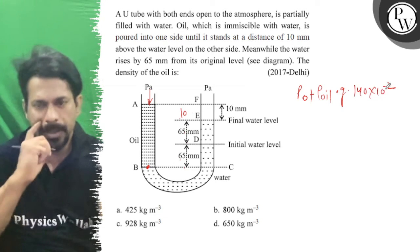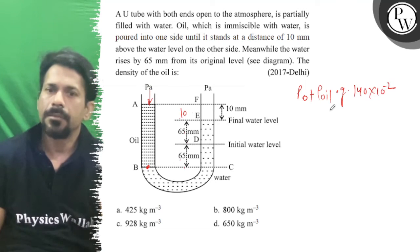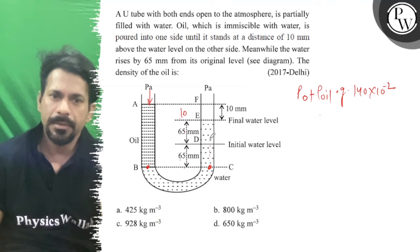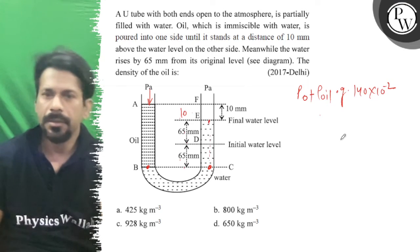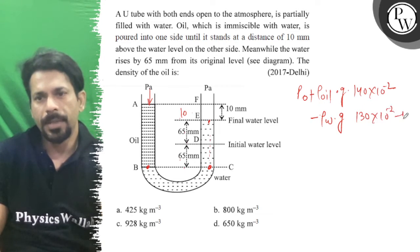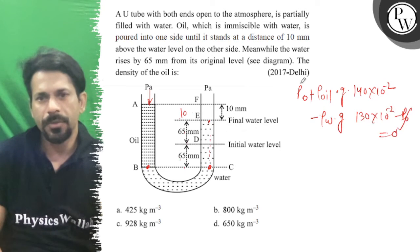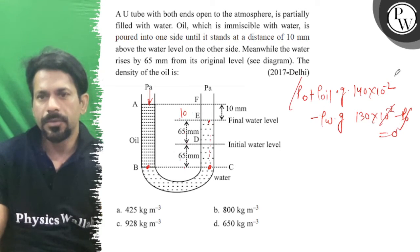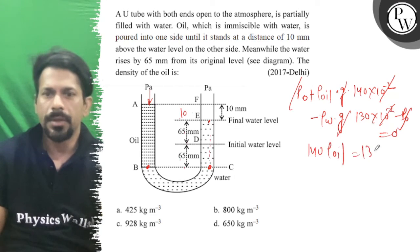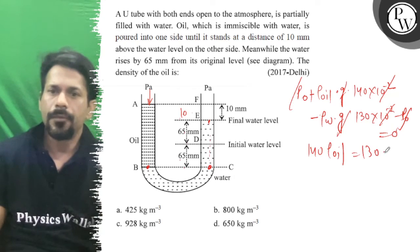Then we are going down to this point, and then going down 130 mm on the water side. So minus rho of water into g into 130 × 10 to the power minus 2, minus p0, equals 0. p0 cancels out, and we get: 140 × rho of oil equals 130 × rho of water.